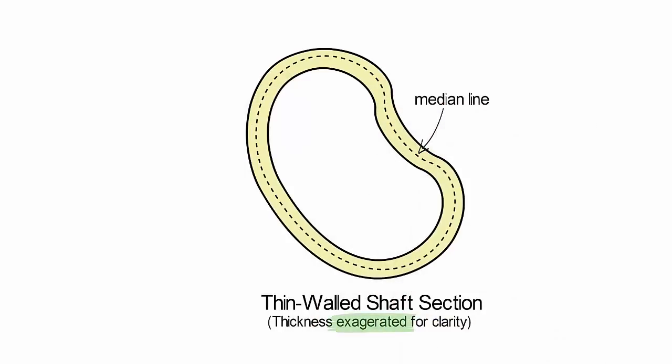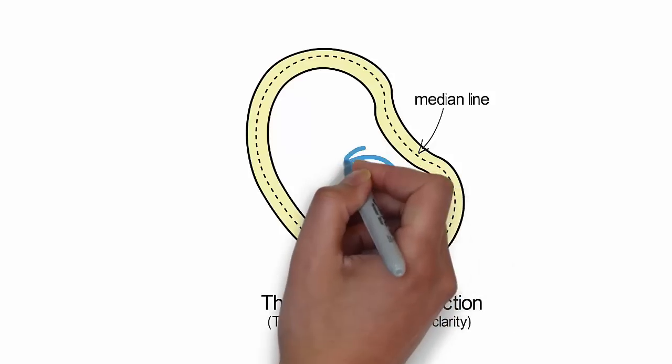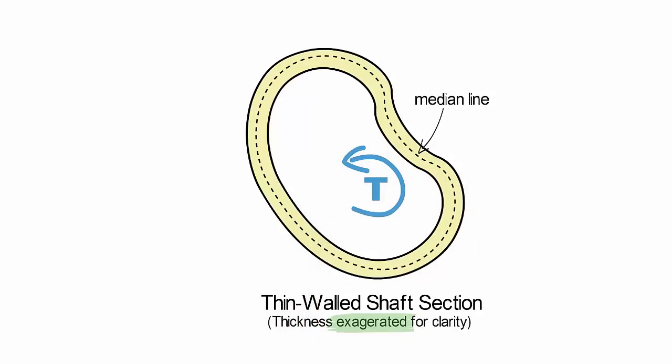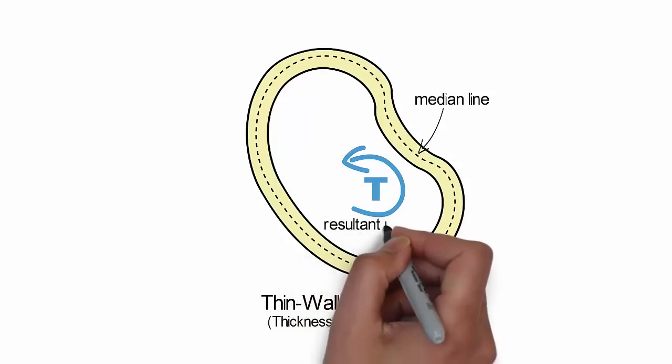However, it is important that the conditions for a thin-walled shaft discussed in the previous video still apply. If torsion is being transmitted by this shaft, there will be an internal torque which we will label T acting on the cross-section.